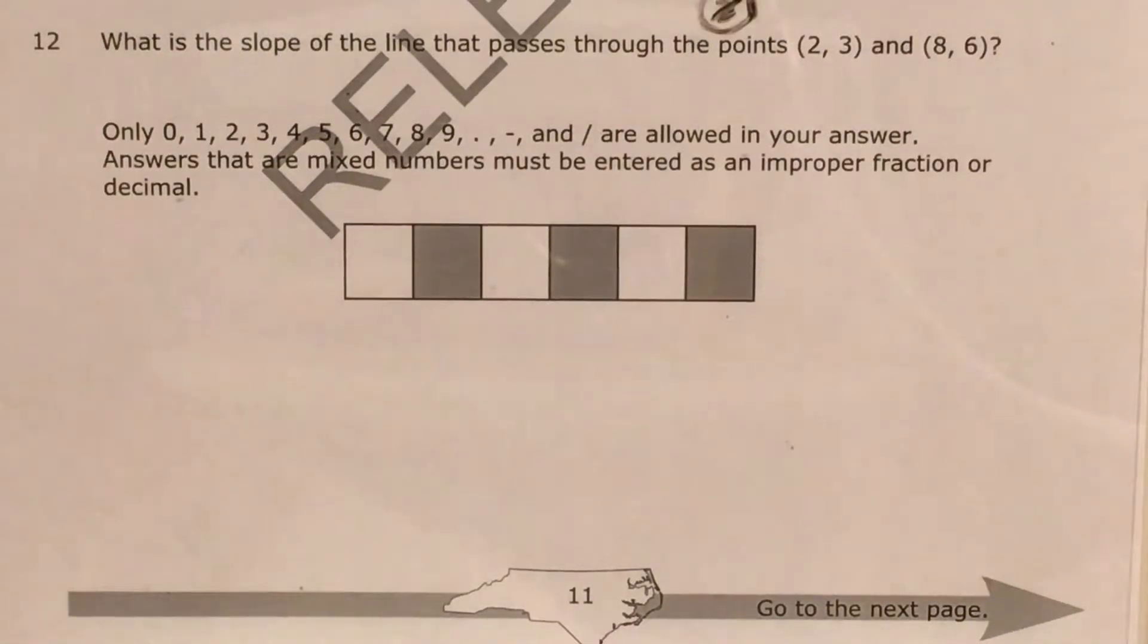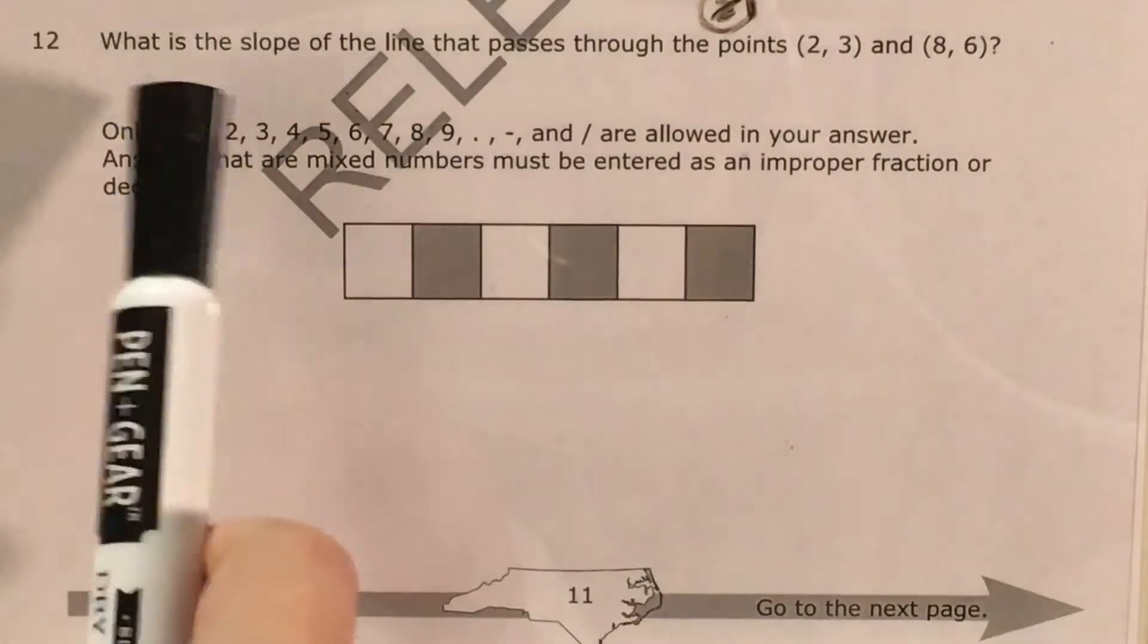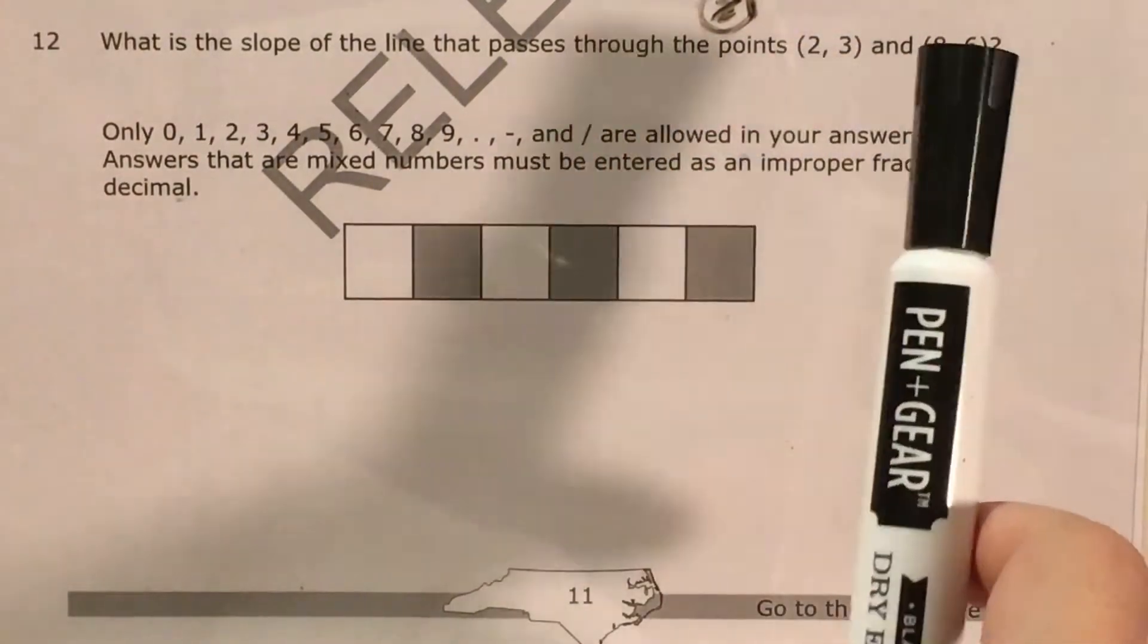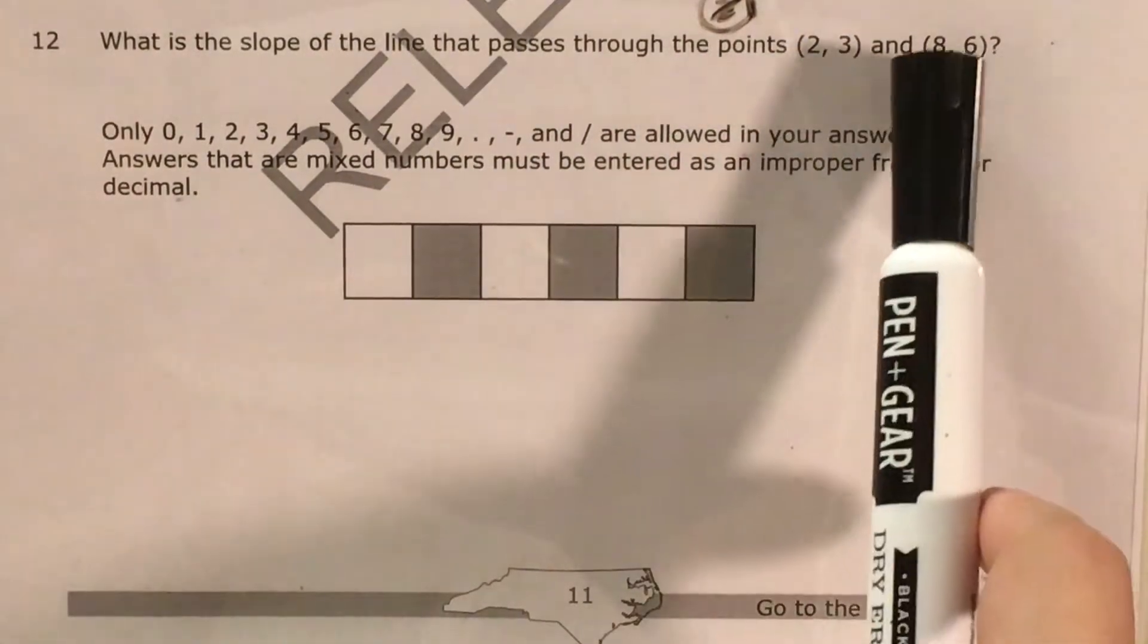What's up, math scholars and math haters? This is Mr. W. Today we're going to tackle question 12 in the 8th grade math questions that North Carolina released this past school year. We can see that we're just being asked to find the slope of the line that passes through these two points, 2, 3, and 8, 6.